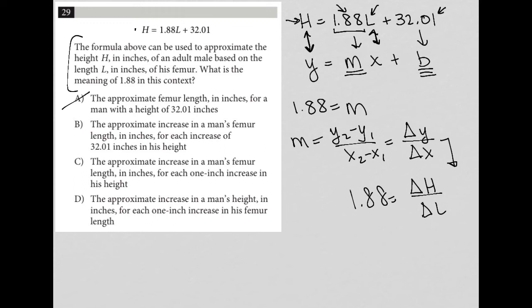Choice B, the approximate increase in a man's femur length. Again, that is not length. We're looking for a change in height to length. So that's gone. Choice C, the approximate increase in a man's femur length. Again, that's wrong.